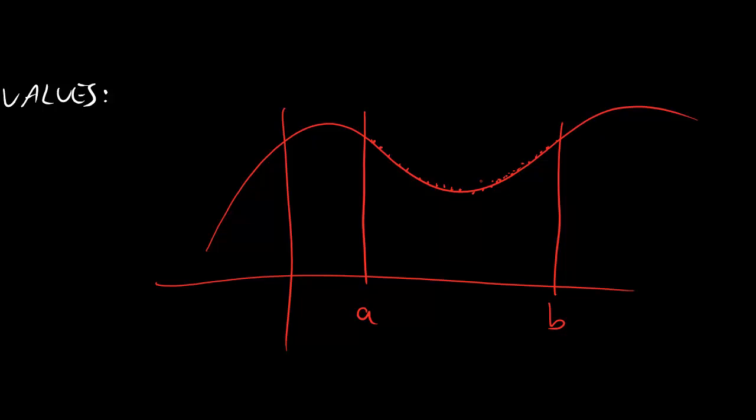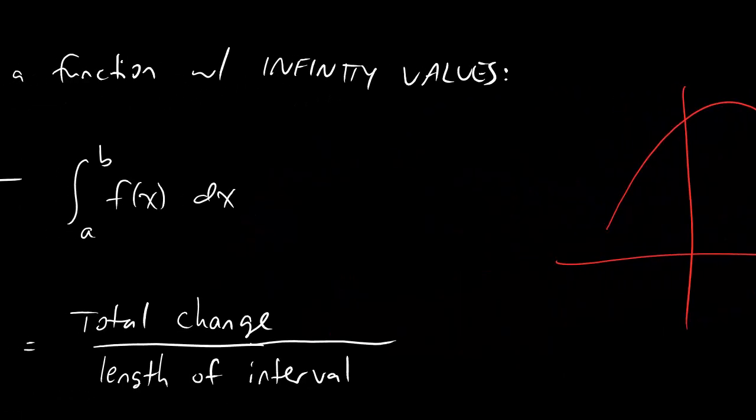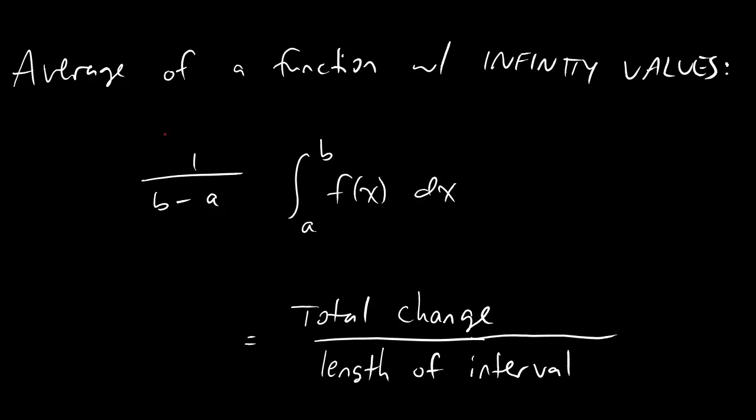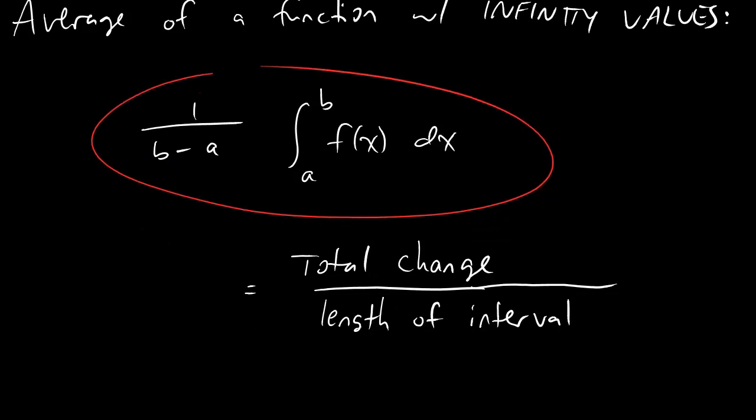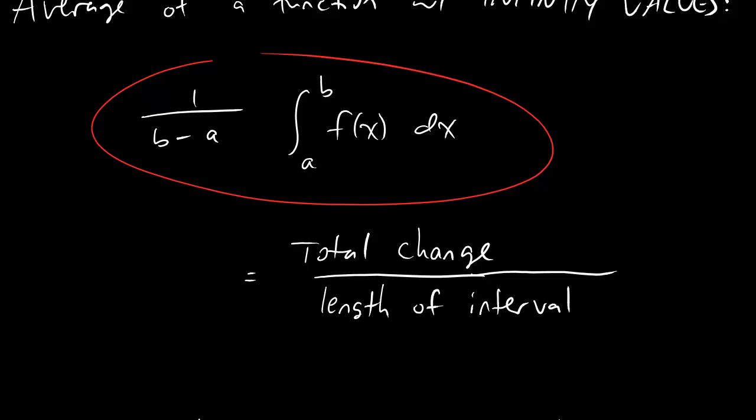But it turns out that some clever person found a way of getting the same and correct answer based on integrals. And so that's cool, I guess, and the equation is this puppy right here. If I'm trying to find the average value of a function, and I'm going between two values, a and b, then all you do is you integrate that sucker, and you divide by the length of the interval.